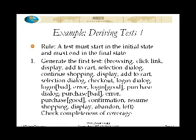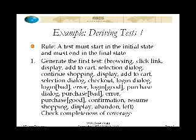So let's take a look at an example. Say that the test must start in the initial state and must end if it enters the final state. To generate the first test, we start off browsing, click a link, display, add to cart, selection dialog, and so forth. Working through the entire state transition diagram, notice that I'm looping where I can — so I've got the login bad, login good, purchase bad, purchase good. Those are shown here.